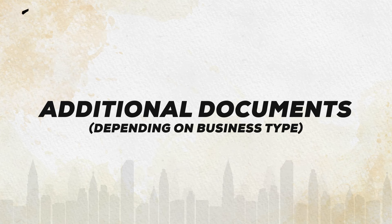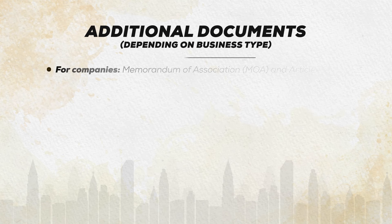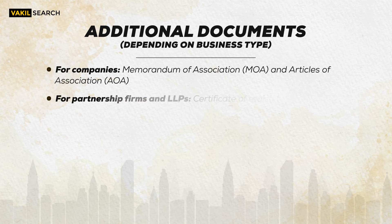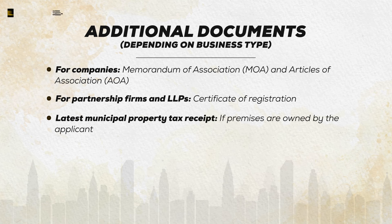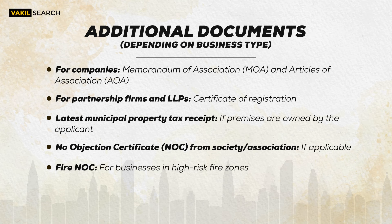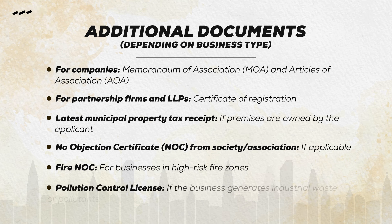Here are a few additional documents depending on your business type. For companies: MOA (memorandum of association) and the articles of association. For partnership firms and LLP: certificate of registration. Latest municipality property tax receipt if premises are owned by the applicant. No objection certificate from society or association if applicable. Fire NOC for businesses in high risk fire zones. Pollution control license if the business generates industrial waste or pollutants.